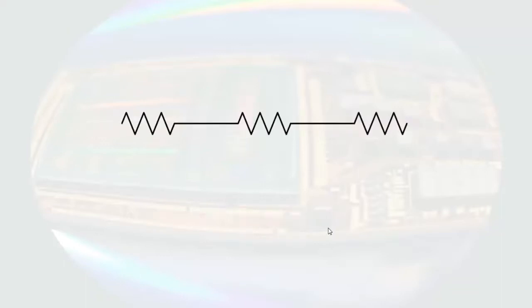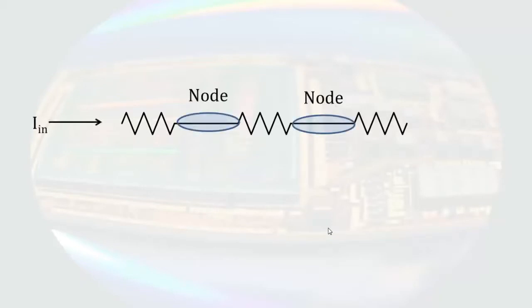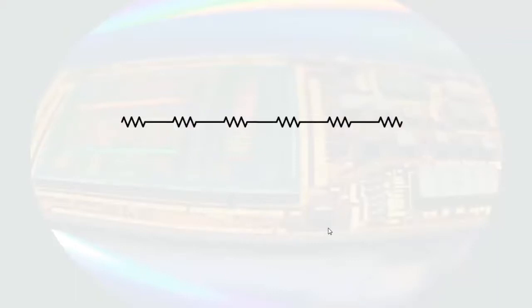The same would be true if I increase that to three resistors. Each pair of resistors shares a node, and if current enters the combination, it has to leave the combination. That means these three resistors are in series. No matter how many resistors I connect in this fashion, they would all be in series.